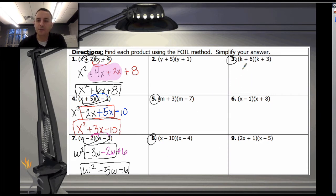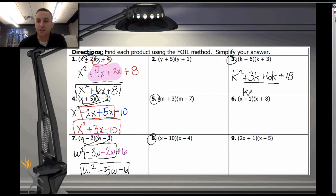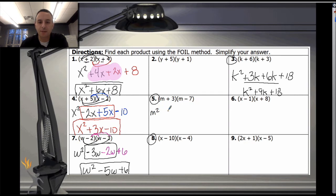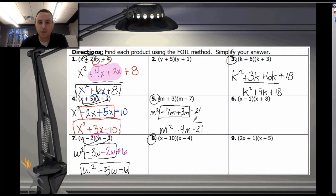Let's take a look at the answers to these three problems. Distributing k gives k squared and positive 3k. Distributing the 6 gives 6k and positive 18. Combining like terms: k squared plus 9k plus 18. For problem 5, which has a negative and a positive sign: m times m is m squared; m times negative 7 is negative 7m. Then 3 times m is plus 3m and negative 21. Combining: m squared minus 4m minus 21.